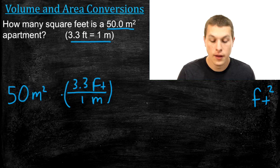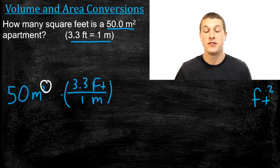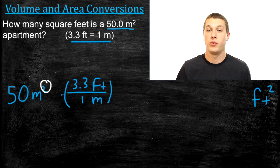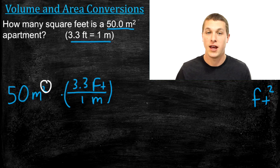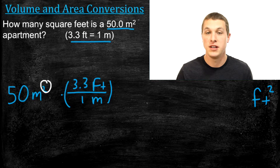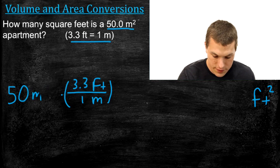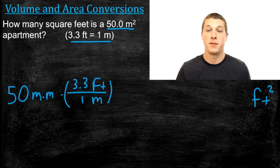Meters squared means there's actually meters twice in that unit — it uses meters, a measure of length, twice to measure area. When you calculate area you do length times width, so you use length twice, which means you need to cancel that unit out twice. Meters squared is the same thing as meters times meters — so 50 meters squared is 50 meters times meters.